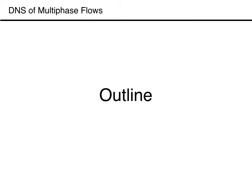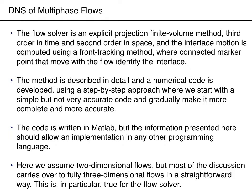Let me end this first lecture by telling you what we will do. We develop a relatively simple method to simulate the unsteady two-dimensional flow of two immiscible fluids separated by a sharp interface. The flow solver is an explicit projection finite volume method, third order in time and second order in space. The interface motion is computed using a front-tracking method, where connected marker points that move with the flow identify the interface. The method is described in detail, and a numerical code is developed using a step-by-step approach where we start with a simple but not very accurate code, and gradually make it more complete and more accurate. The code is written in MATLAB, but the information presented here should allow an implementation in any other programming language.